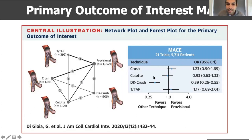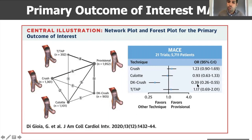However, the line for DK CRUSH is towards the left side of the plot and does not touch the unity line, meaning there is a significant difference favoring DK CRUSH compared to provisional for the outcome of MACE. The odds ratio shows a 61% reduction in the occurrence of MACE in patients treated with DK CRUSH compared to provisional stenting.